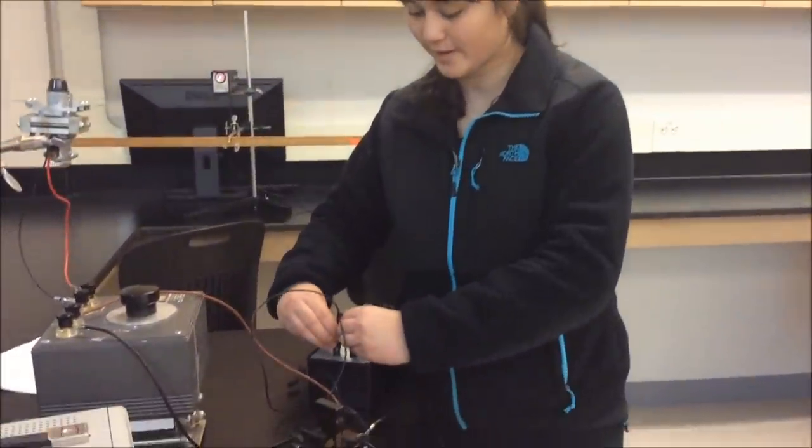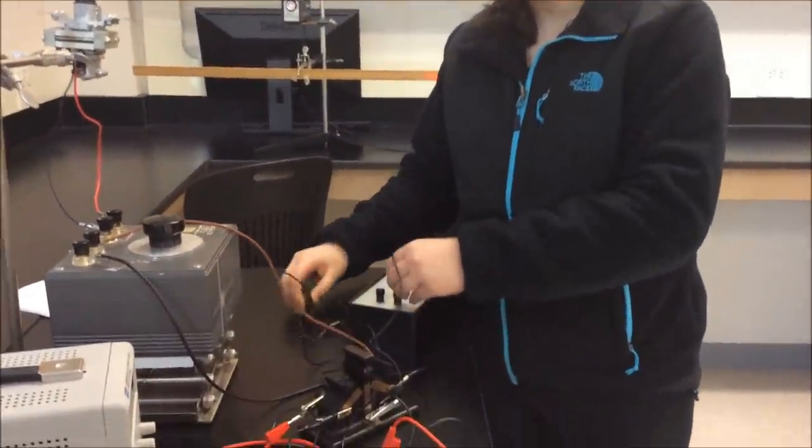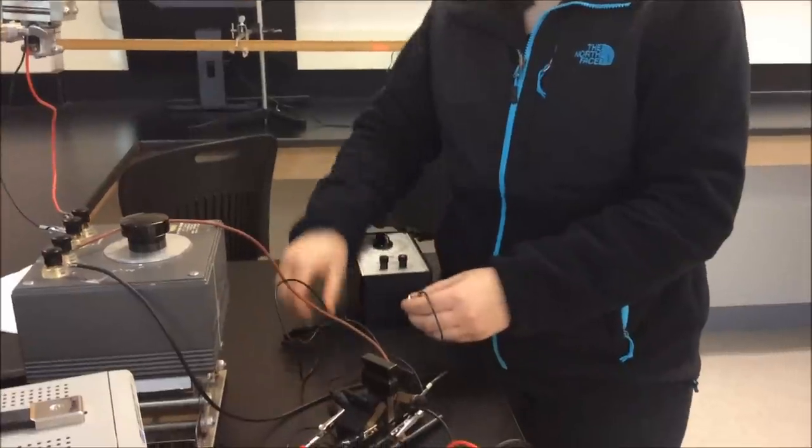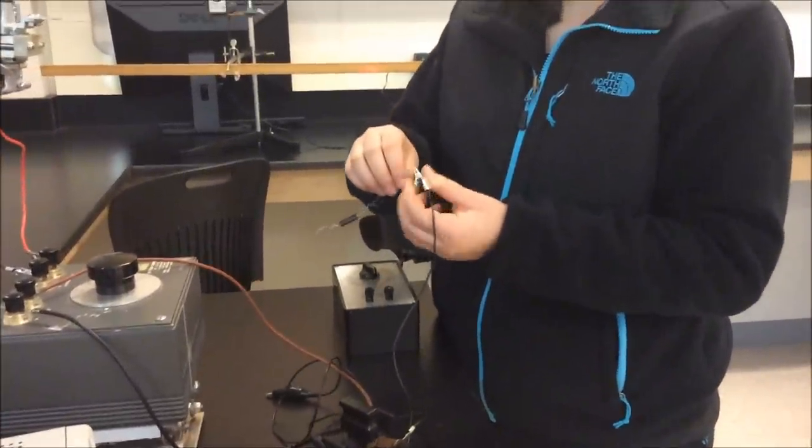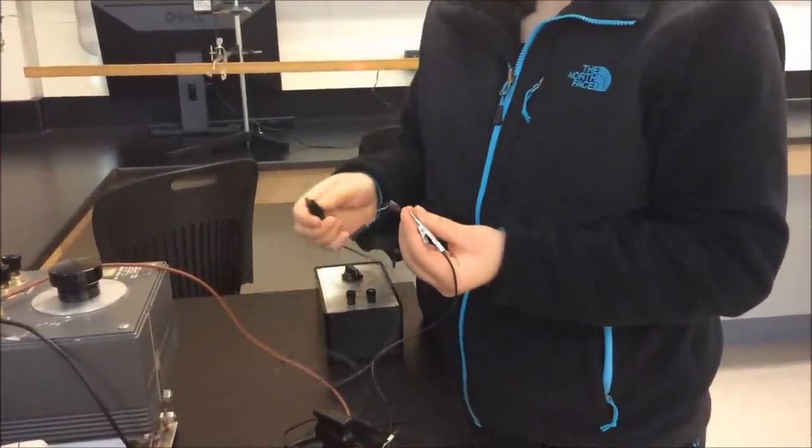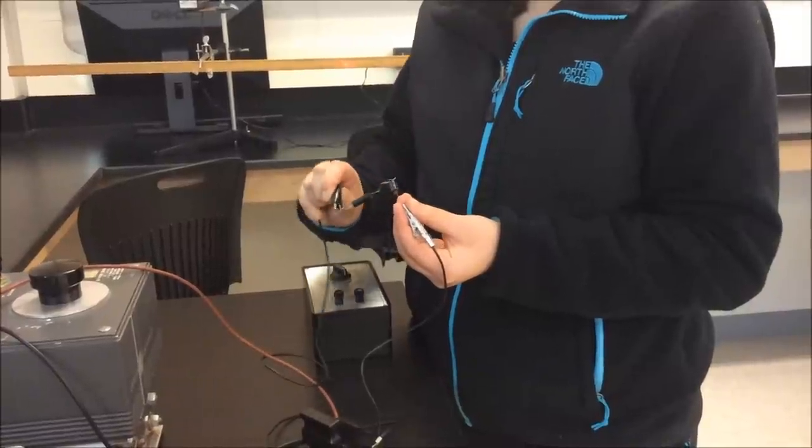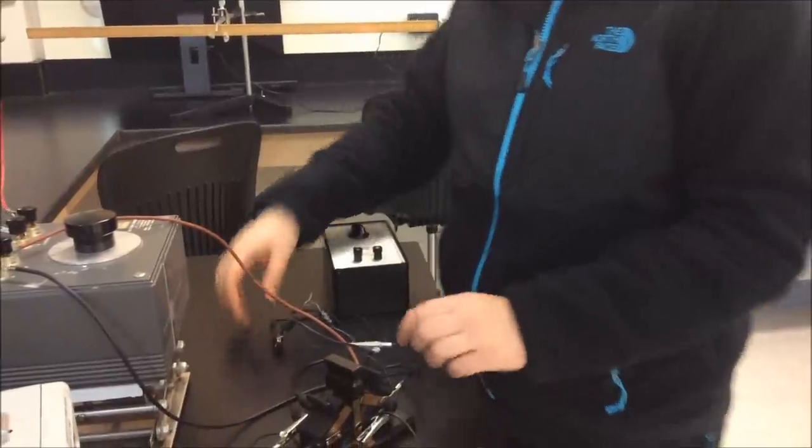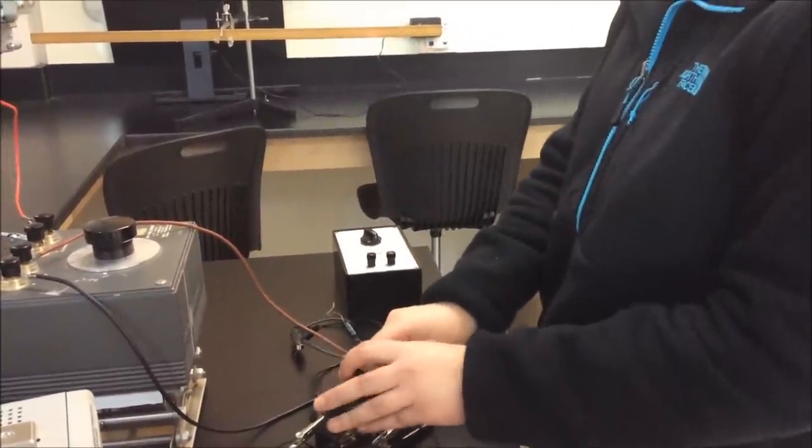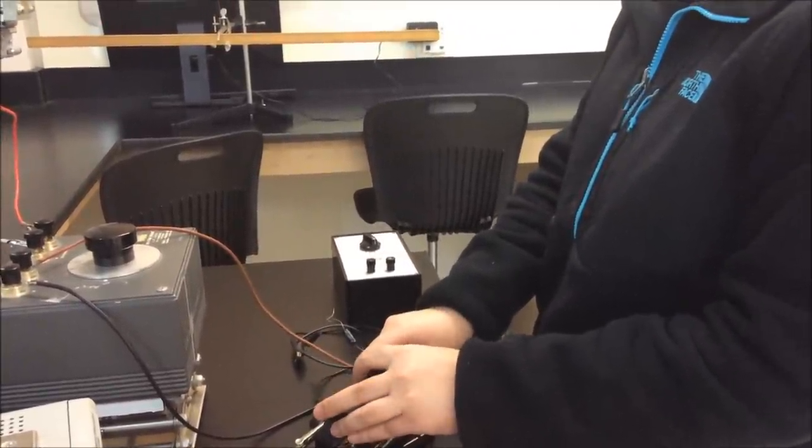For the next part of this experiment, you're going to remove the capacitor decade box and instead attach the wires to two unknown capacitors that are in series. Once you do that, you're going to repeat the same thing that you did for the procedure of the previous experiment and record the deflection of the laser beam.